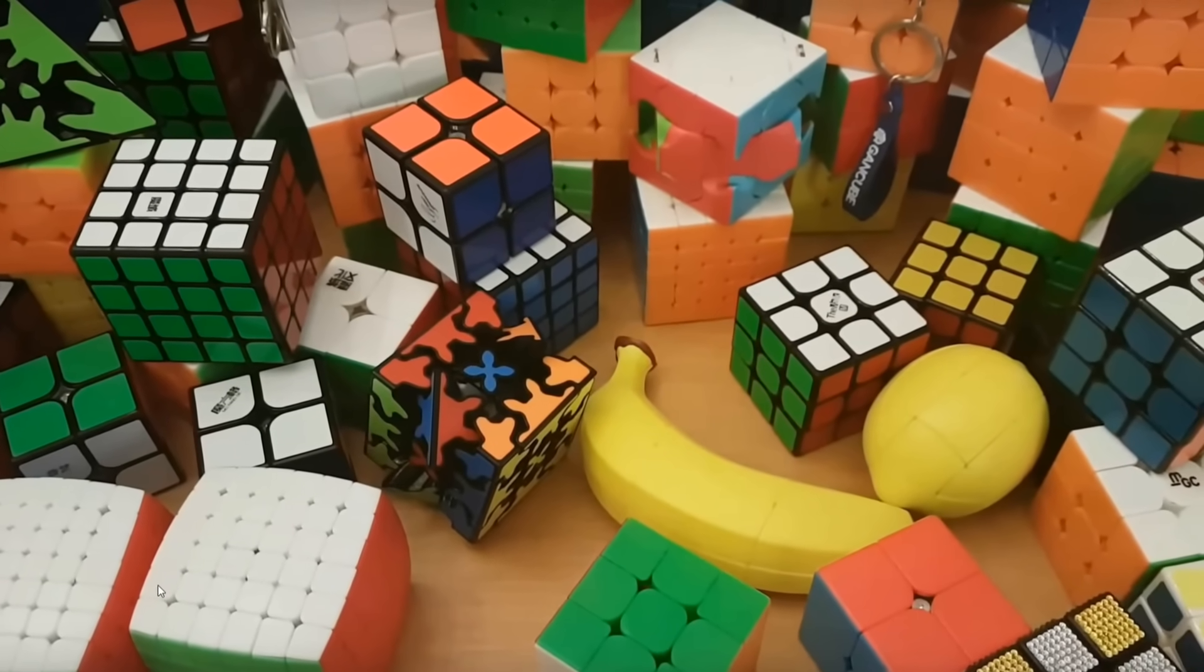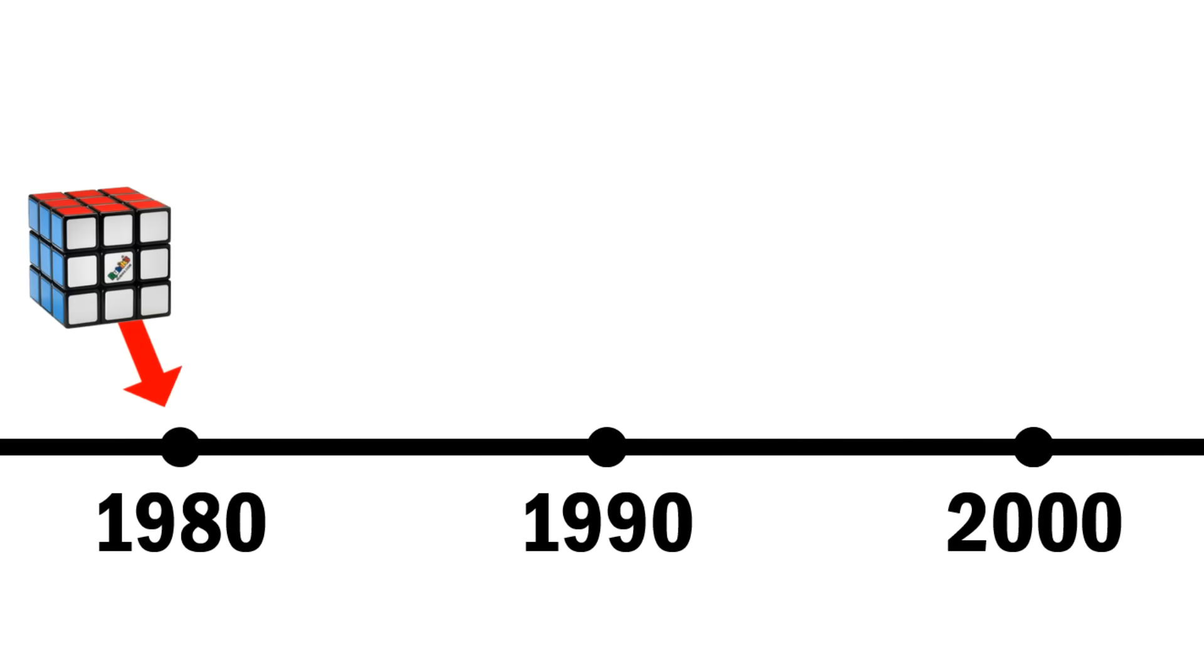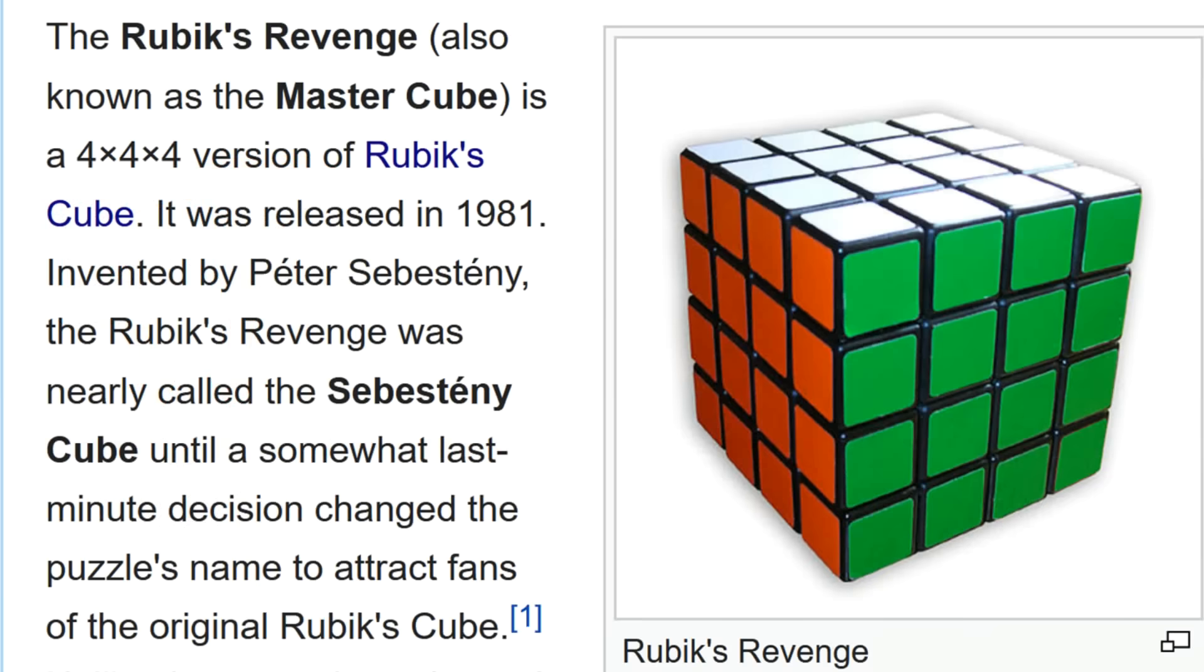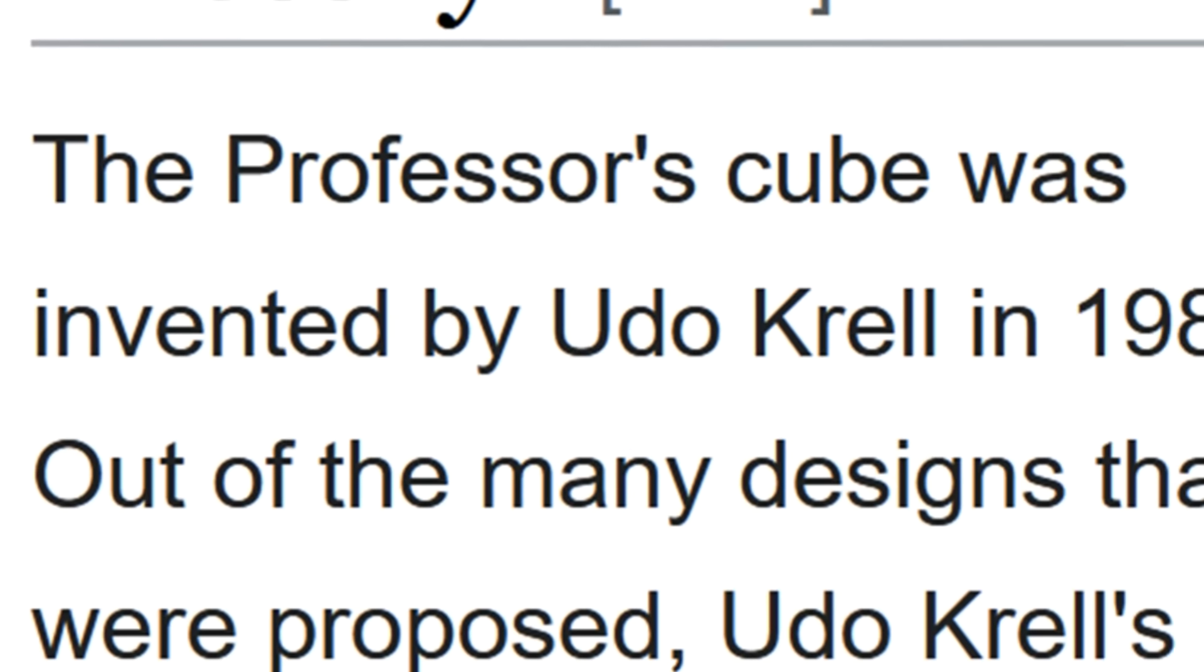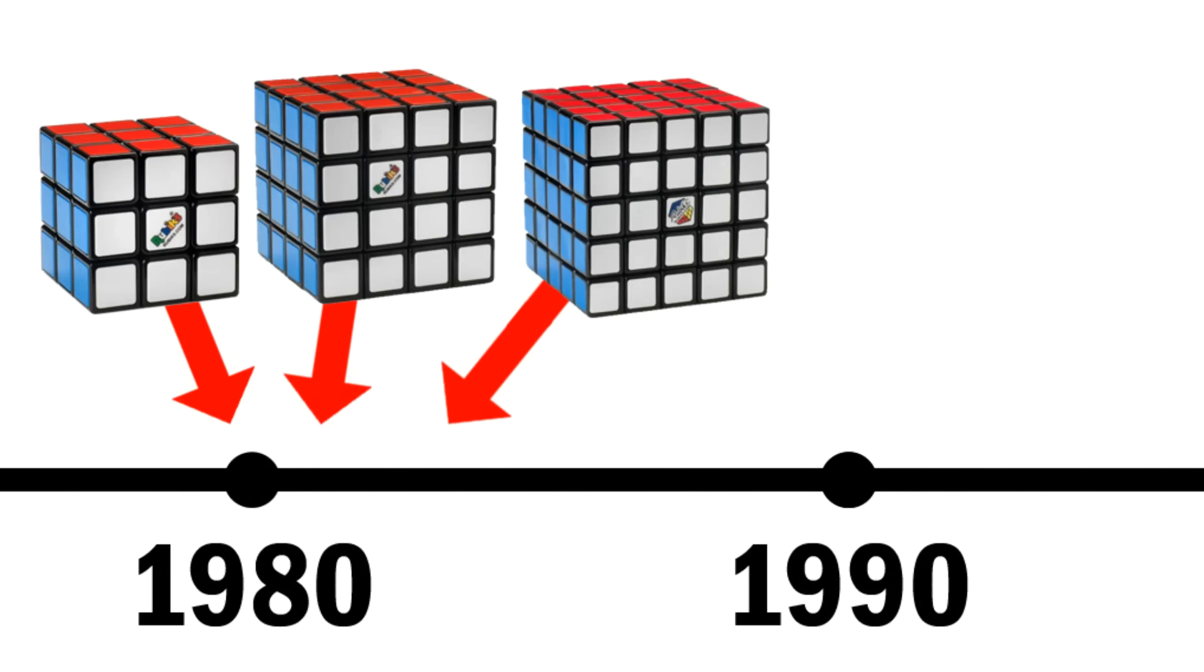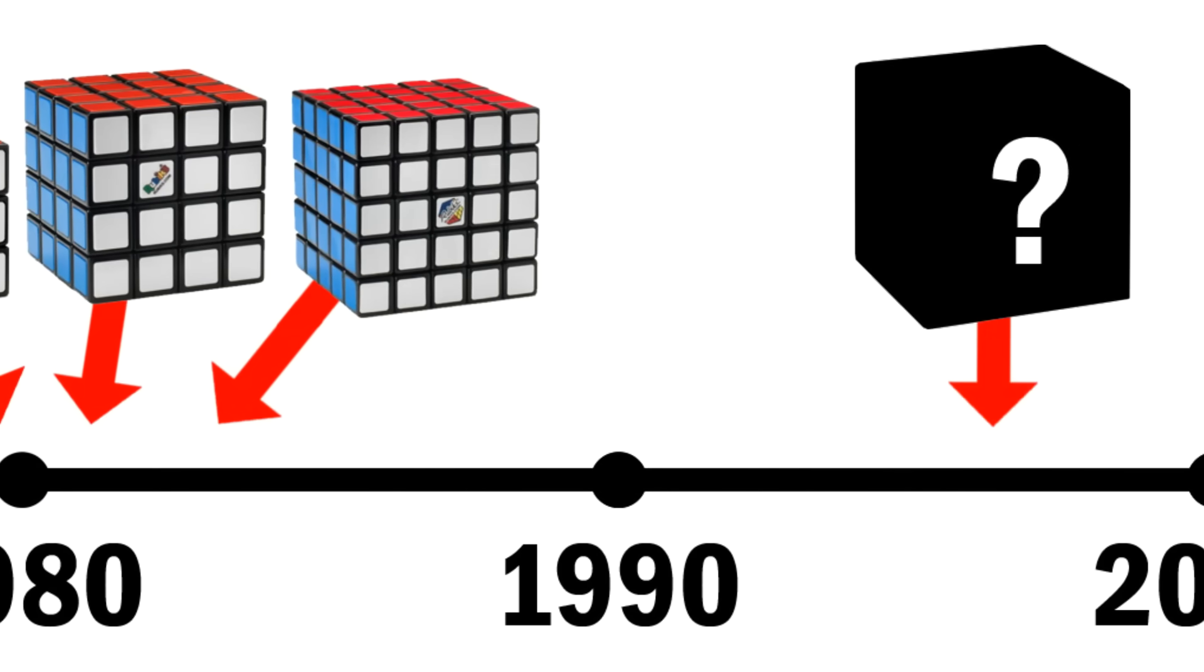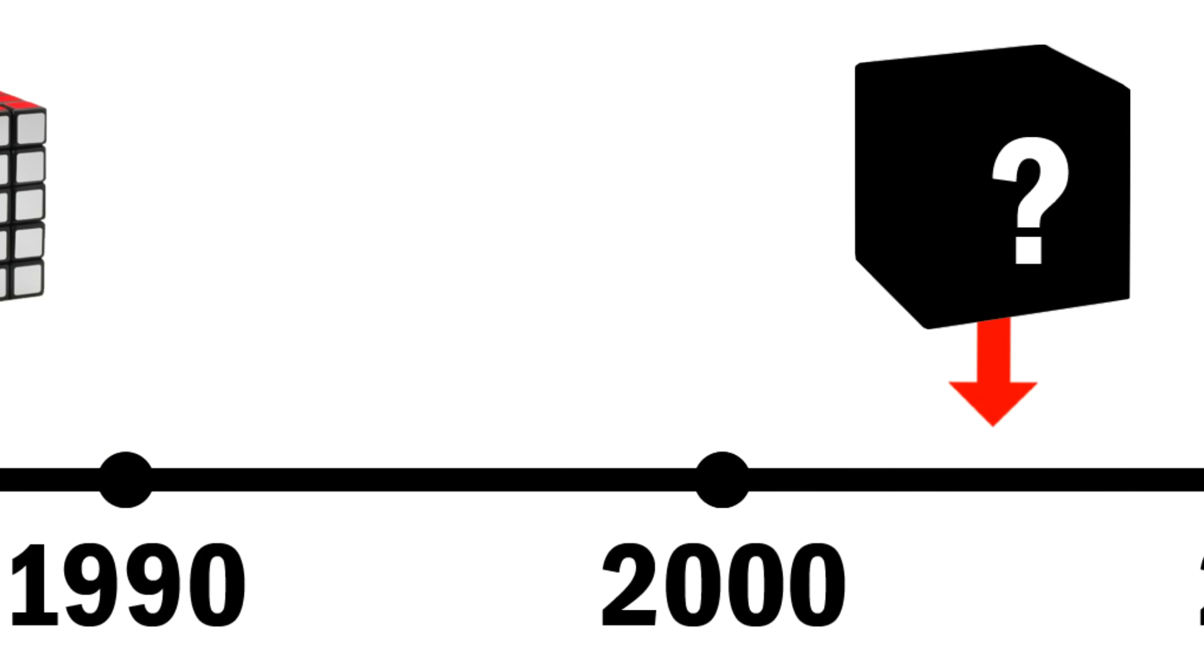Rubik's Cubes come in many different shapes and sizes, but the original 3x3 was released in 1980. The 4x4 came out in 1981, interestingly not actually invented by Erno Rubik, but still named the Rubik's Revenge because marketing. And similar story for the 5x5 which came out in 1983. So when do you think the first 6x6 was made? Keep going. In 2008, V-Cube came out with the V-Cube 6.